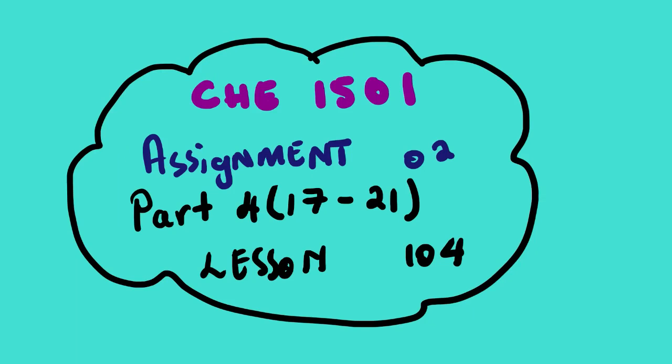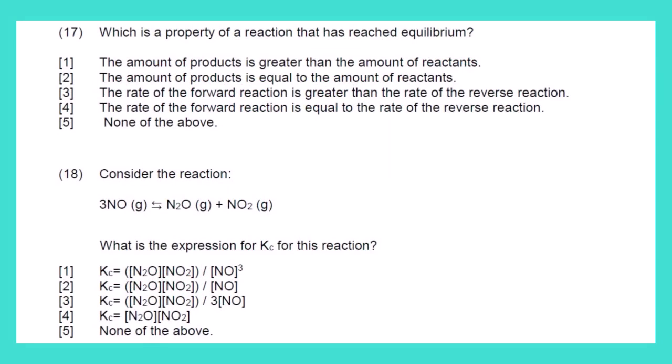Our lesson for today: we are going to look at Chemistry 1501. We are still busy with assignment number two, this is part four, whereby we will be looking at question 17 to question 21. Let us start. Question 17 says: which is the property of a reaction that has reached equilibrium?